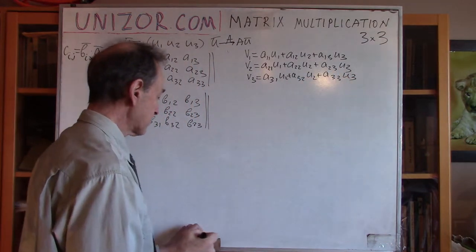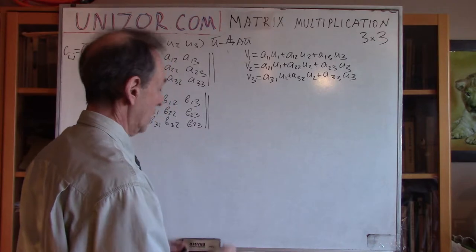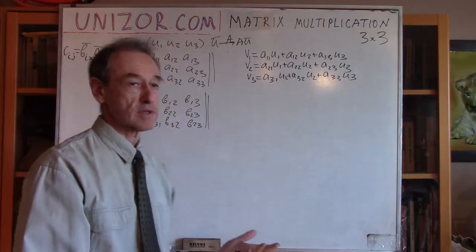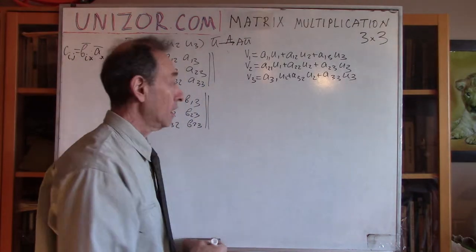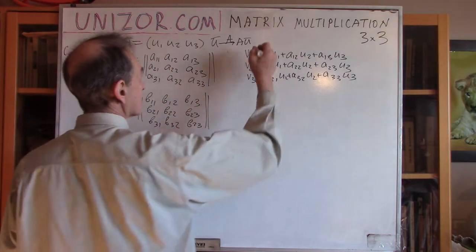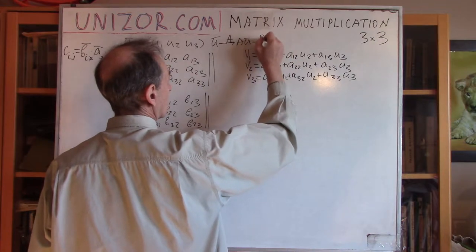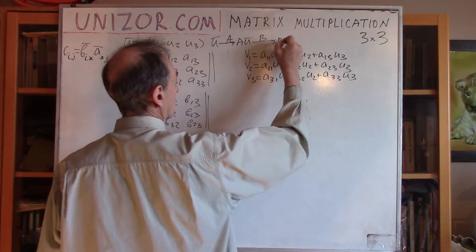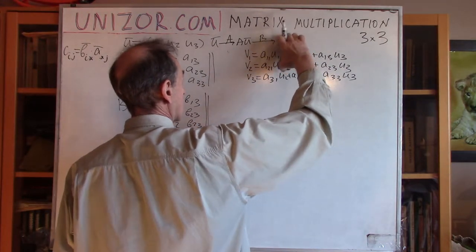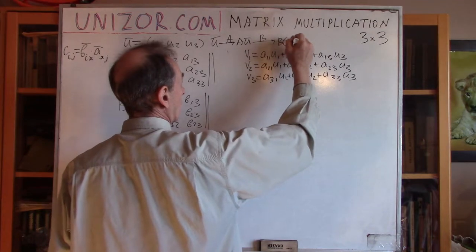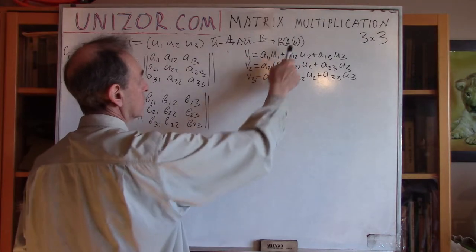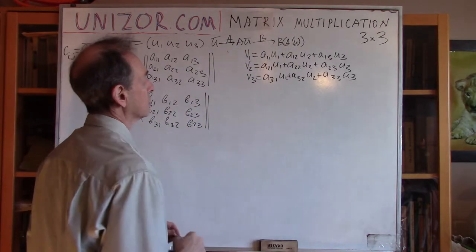We have transformed vector U into vector V using matrix A. Now let's do exactly the same with matrix B, which transforms V into another vector. First we multiply A by U, which gives V, and then we multiply B by the result.